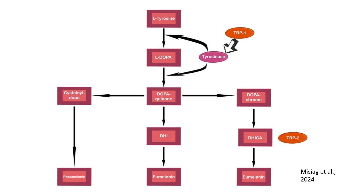In this video we will analyze the melanogenesis pathway. This diagram illustrates the biochemical pathway of melanogenesis, the process responsible for melanin production in melanocytes. Melanin is crucial for pigmentation and UV protection, and its synthesis is tightly regulated by key enzymes such as tyrosinase, TRP1 and TRP2.